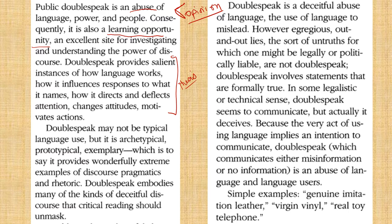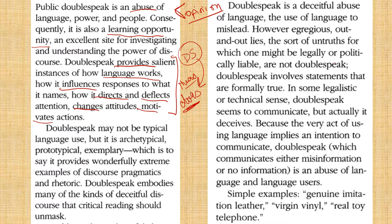This sounds like a thesis statement. How do I know? It's giving a sort of list — it's saying what doublespeak does. This whole paragraph has a sort of thesis to it: it's saying what doublespeak is and what it does. It provides instances of how language works, how it influences responses, how it directs and deflects attention, changes attitudes, and motivates actions. So it's talking about what doublespeak — I'm going to call it DS — actually does. I think this is probably the thesis or the main idea.